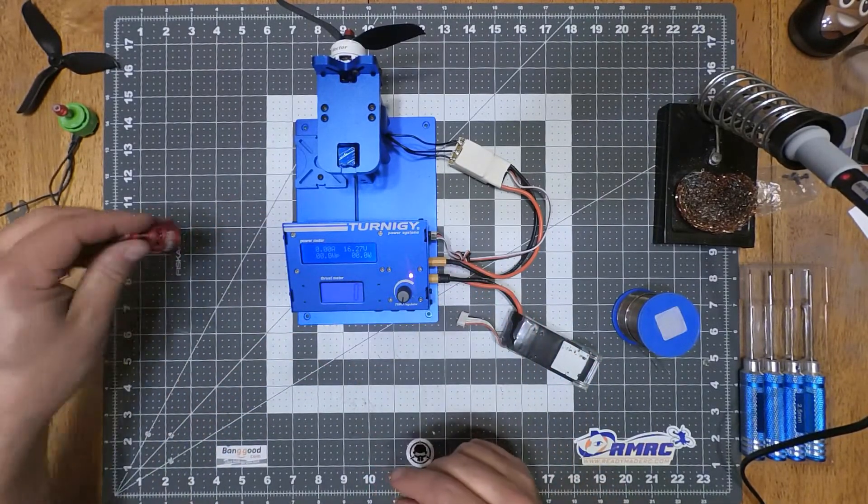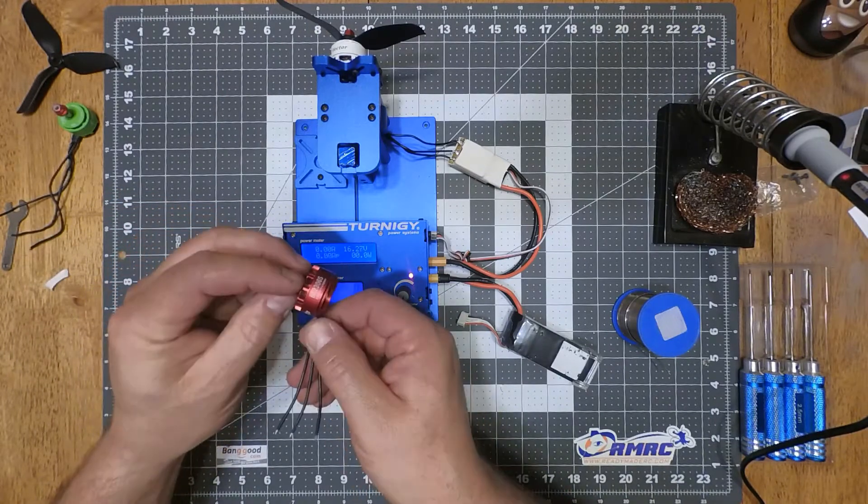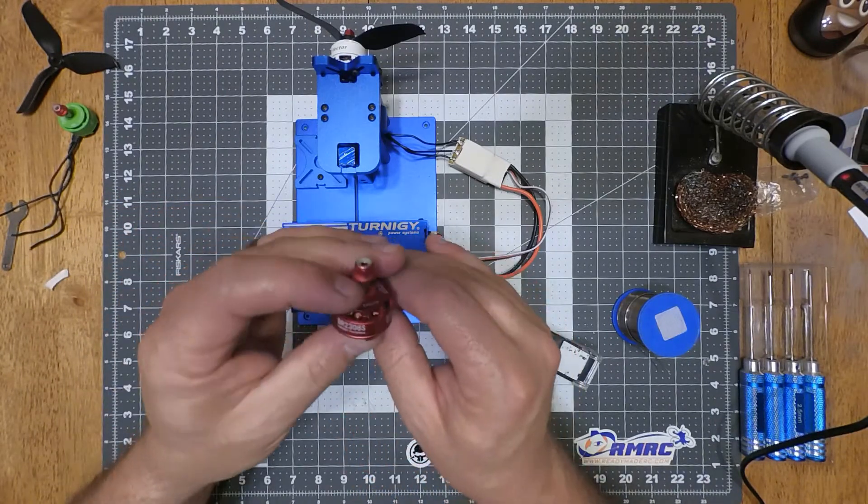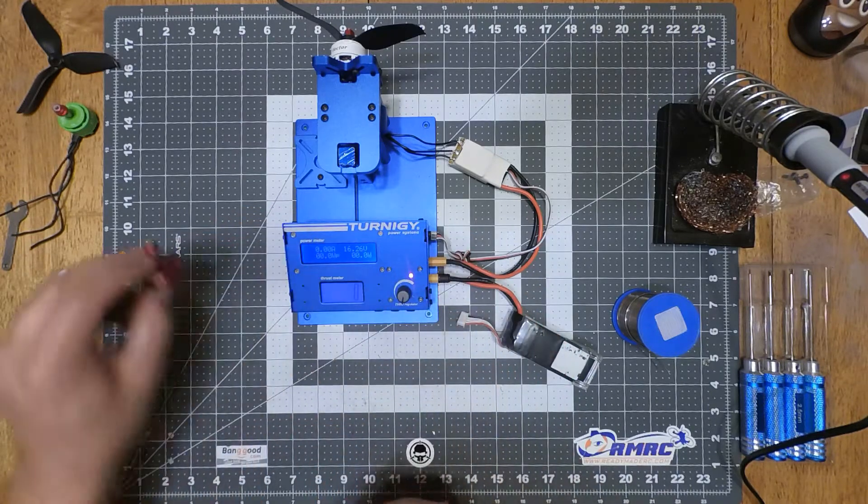And then I'll switch over and put the Racer Star, the BR-2306 2400 kV fire motor on there. And we'll see what this one runs.